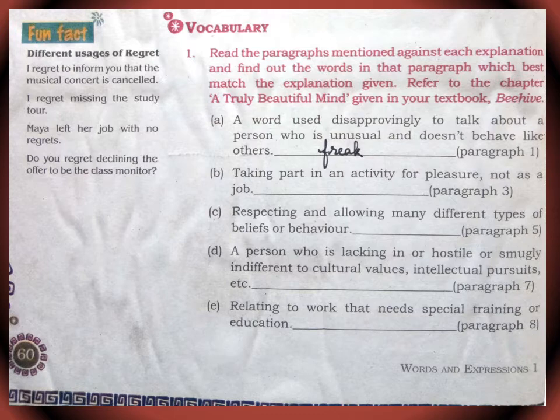Read the paragraphs mentioned against each explanation and find out the words in the paragraph which best match the explanation given. Refer to the chapter A Truly Beautiful Mind given in your textbook. Dear students, if you don't have the textbook, you will be getting a PDF of Truly Beautiful Mind. Let us see the first example: a word used disapprovingly to talk about a person who is unusual and doesn't behave like others. In paragraph number 1, we have to find the word and the word is Freak. In the same way, dear students, read the explanations carefully and find the words in the paragraph given.